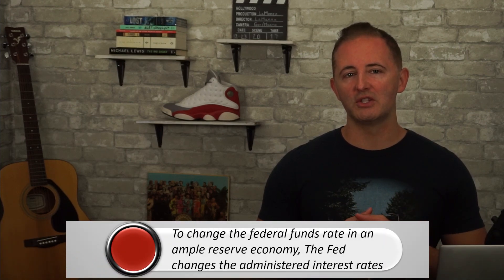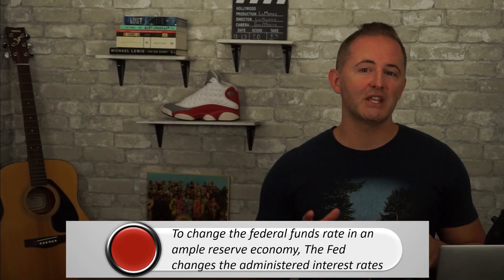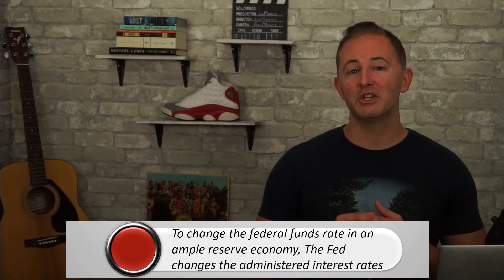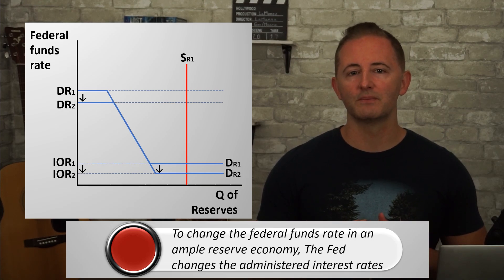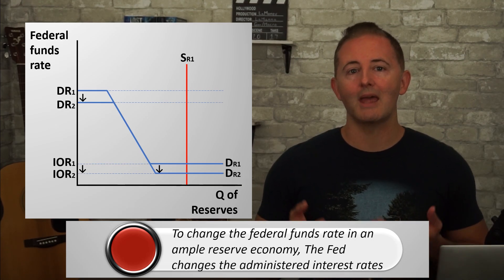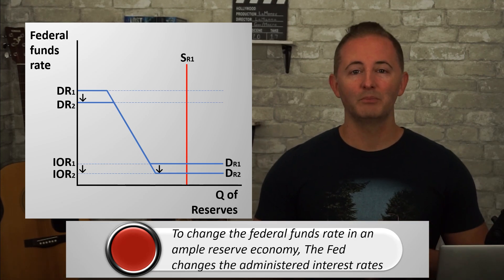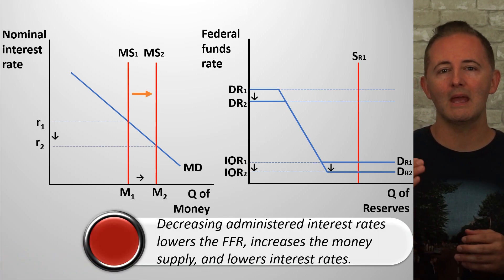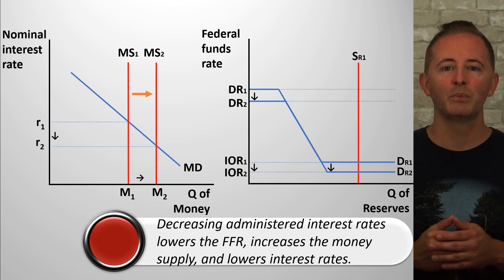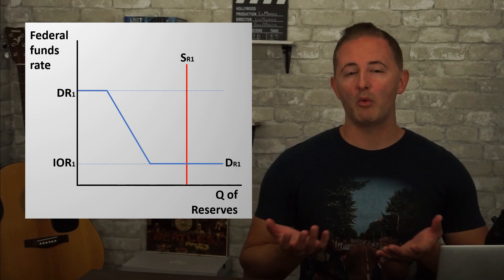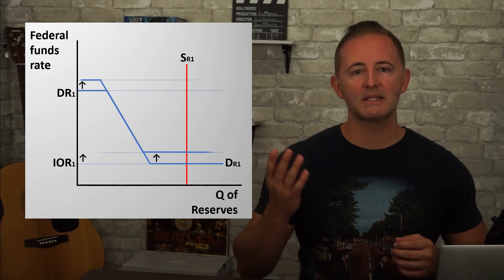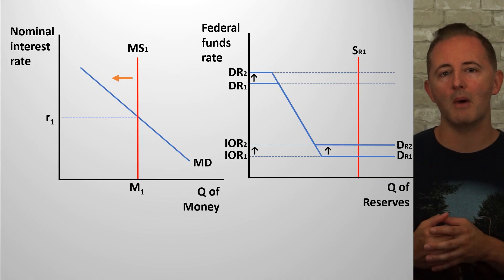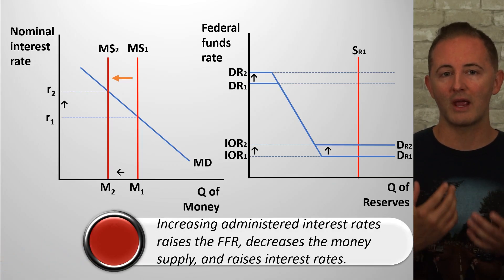So to change the federal funds rate in the ample reserve world, all the Fed has to do is change their administered interest rates. If they want a lower federal funds rate, they just decrease the discount rate and interest on reserves — on our model, both interest rates decrease and we have a lower federal funds rate. In an ample reserve economy, lowering the administered interest rates increases the money supply and lowers the nominal interest rate. If the Fed wants to raise nominal interest rates, they do the opposite: raise the discount rate and interest on reserves, which increases the federal funds rate, which on our money market model shifts the money supply curve to the left, raising the nominal interest rate.